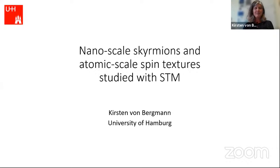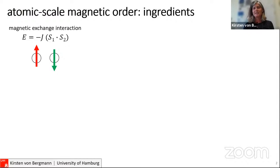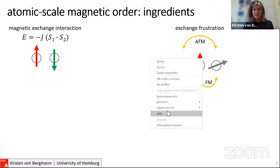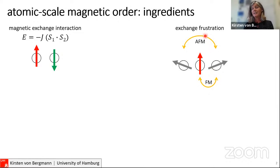I want to discuss today nanoscale and atomic scale spin textures. What do we need to have these? The easiest way is probably to have an anti-ferromagnetic interaction, because that immediately gives us atomic scale magnetic order. There are other interactions that also play a role, for example exchange frustration — meaning there's not only an interaction between nearest neighbor magnetic moments but also between next-nearest neighbor moments. If they are competing, one ferromagnetic and the other anti-ferromagnetic, they can form a non-collinear magnetic state such as a spin spiral.